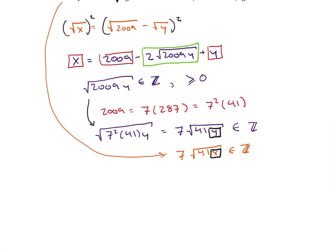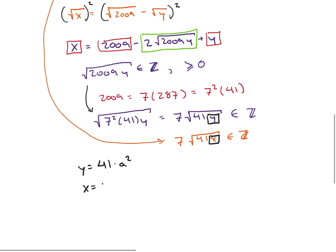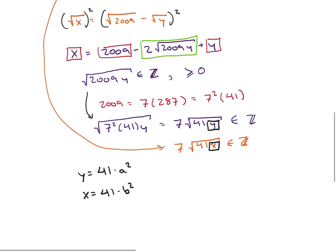So I have to have a factor of 41, which is a prime, and I also have to have anything else that's in there as a perfect square. So y must be equal to 41 times some number squared, and similarly x has to be 41 times some other number squared. Because if they aren't of that form, then when I take the square root I won't get an integer.